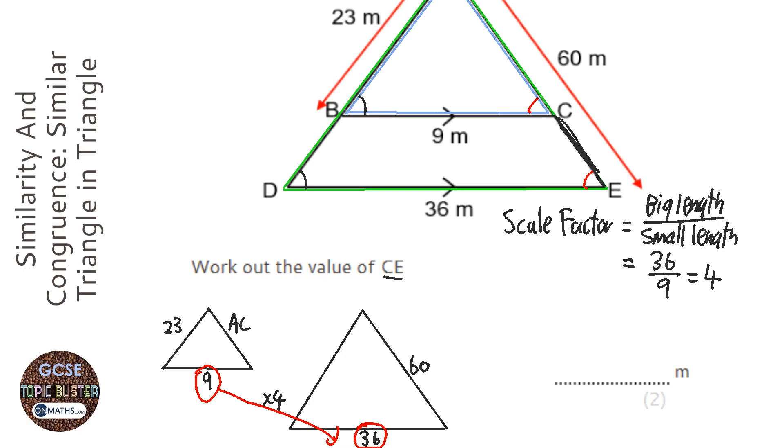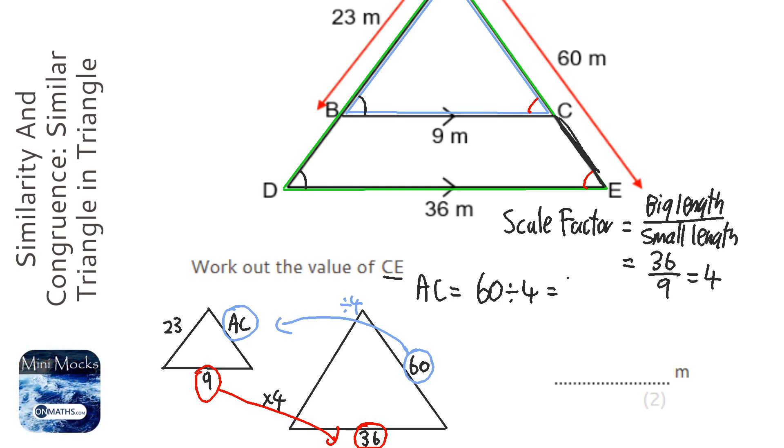Now, if we go from big to small, we times it by 4. But here we're going from... sorry, if we go from small to big, we times it by 4. But here we're going from big to small. So instead of times by 4, we're going to divide it by 4, because it's going to get smaller, isn't it? So we're going to do 60 divided by 4. And I should really write down what I'm doing. I'm doing AC. And that's going to be 15. So we know that it's going to be 15 here for this bit.